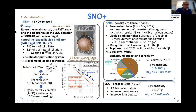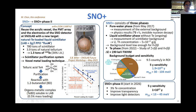A further step adds barium tagging to a NEXT-HD-like module. Barium tagging by single-molecule fluorescence imaging has already been demonstrated by the NEXT collaboration, and there is R&D to adapt this to the dry xenon environment, targeting a background-free experiment with sensitivity of order 8 × 10²⁷. Moving to the SNO+ line: SNO+ reuses the acrylic vessel, PMT array, and electronics of the SNO detector at SNOLAB, with a new target of liquid scintillator instead of heavy water, and 1.3 tons of tellurium-130 dissolved in 3.9 tons of liquid scintillator using a specially developed organometallic complex.